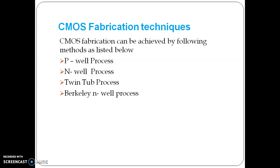CMOS fabrication can be achieved by the following methods: P-well process, N-well process, Twin Tub process, and the fourth one is Berkeley's N-well process. All these processes are used for CMOS fabrication. In this video, I will be discussing the P-well process.